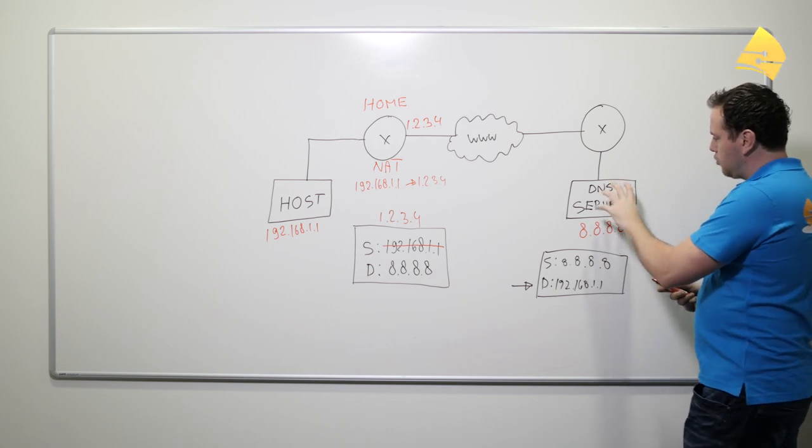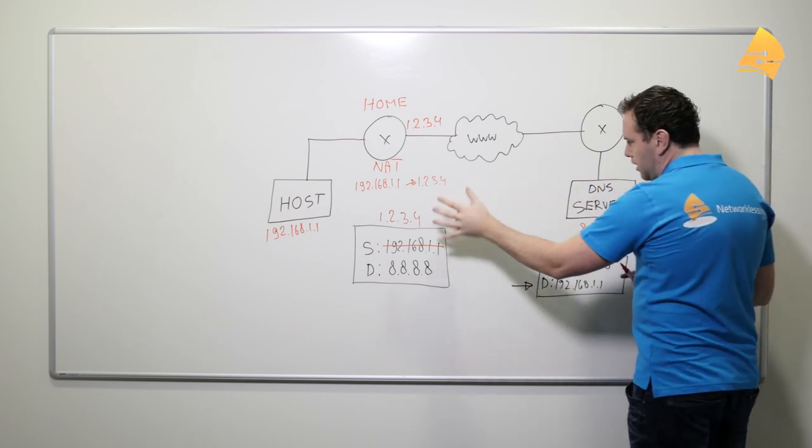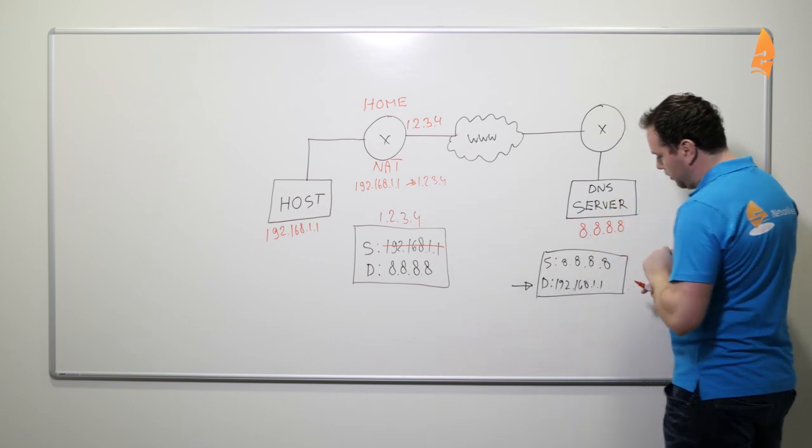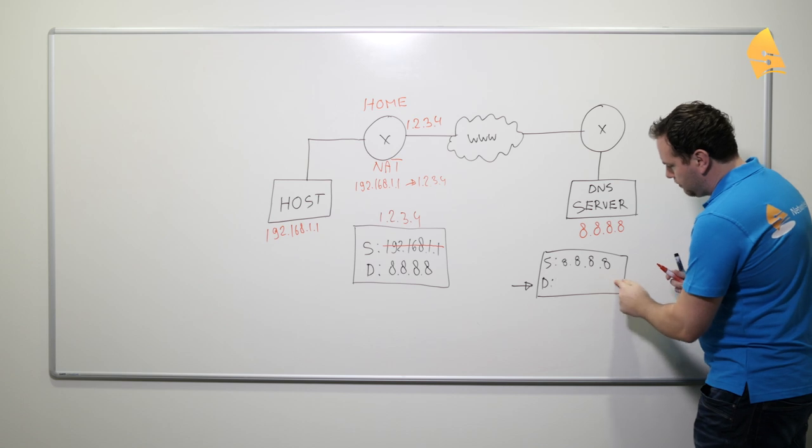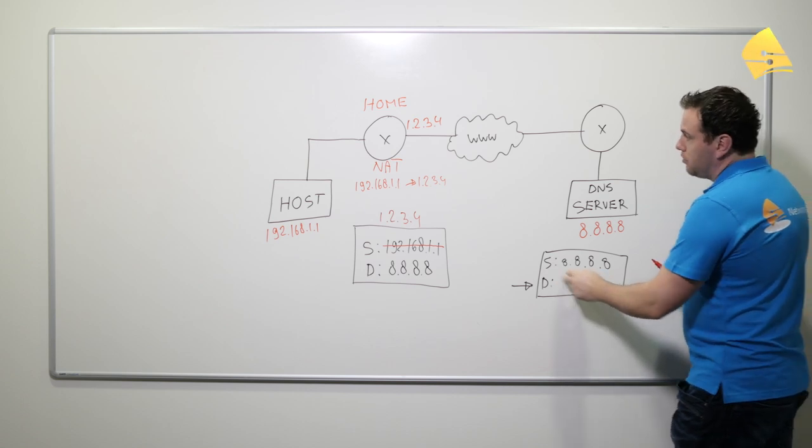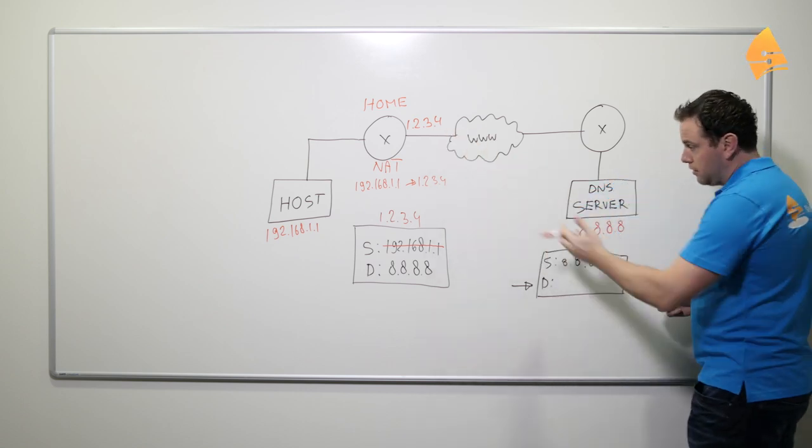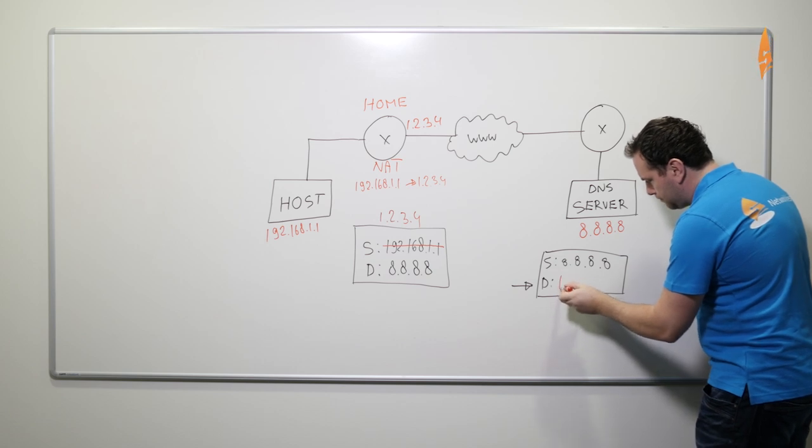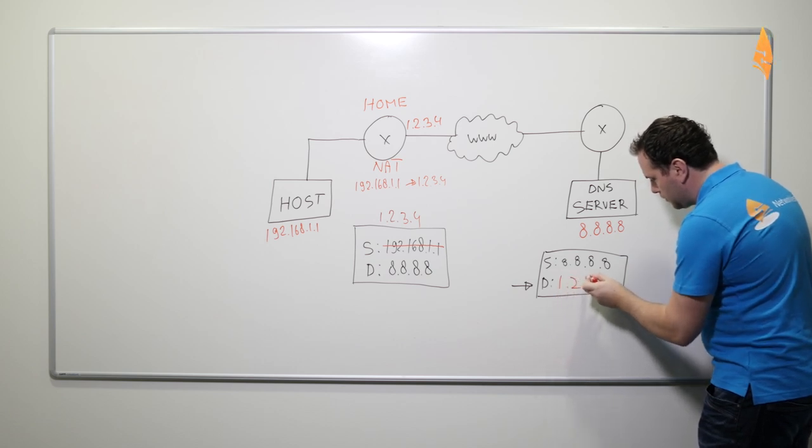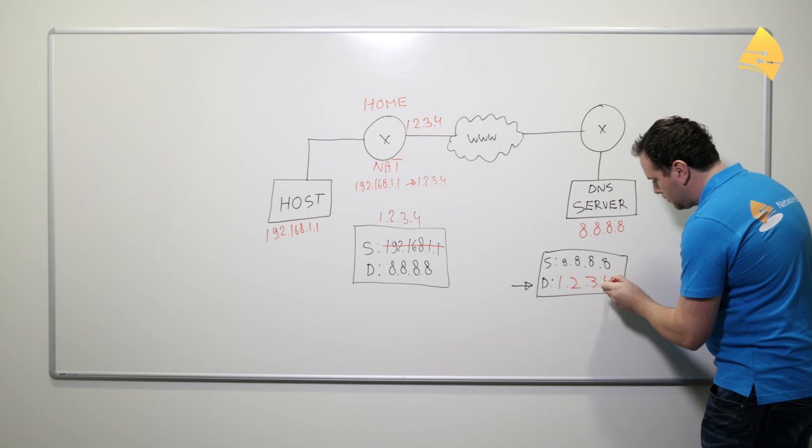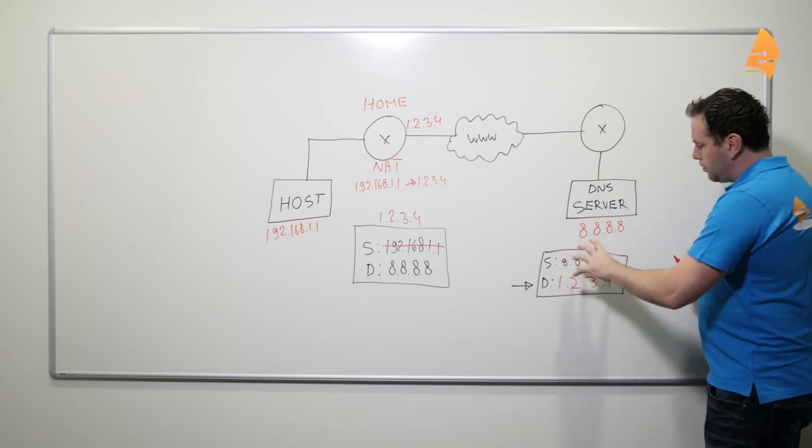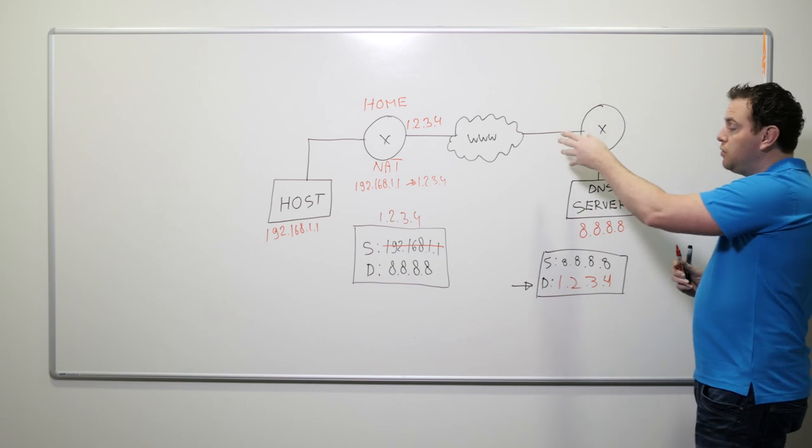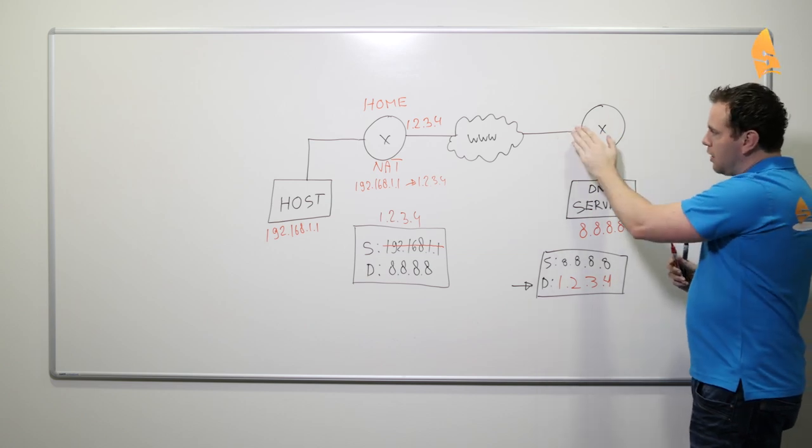And then the same thing. This DNS server will want to respond to this IP packet. But now it thinks that it's talking to this public address, not the private address, since that was the source. The DNS server will send this packet to the router, to the ISP, then it will be routed.